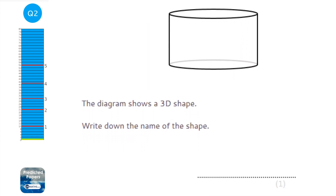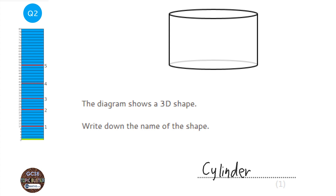It's really important for the GCSE that you understand the two-dimensional and three-dimensional names of shapes. This one is a cylinder. There's no way of working it out without just sitting and learning them — there are some great posters and revision resources that go through the names of shapes.